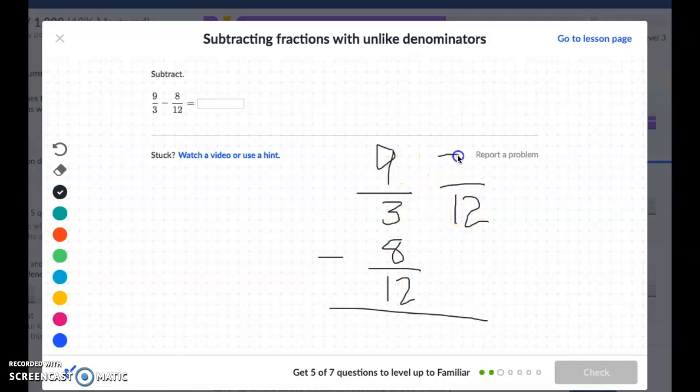So then I'm going to kind of get rid of that because I changed it into 36 twelfths. So that's what I'm thinking of now. So then 36 twelfths minus 8 twelfths is going to be 28. So 36 take away 8 is 28, and then twelfths stays the same.